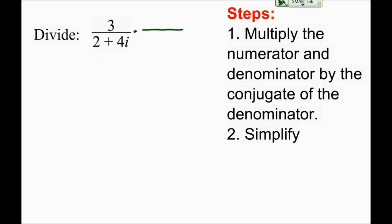So what I'm going to do, I'm going to multiply top and bottom, in this case, by 2 minus 4i. And I'm going to do that to the top as well. 2 minus 4i.